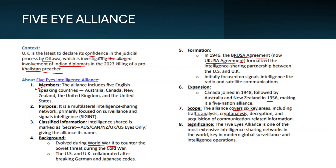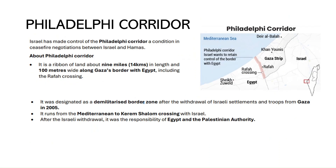The alliance covers six key areas including traffic analysis, cryptanalysis, decryption, and acquisition of communication-related information, making it one of the most important intelligence and security alliances in the world. The next update is on the Philadelphia Corridor. Israel is demanding control of the Philadelphia Corridor as a condition for the ceasefire agreement between Israel and Hamas.